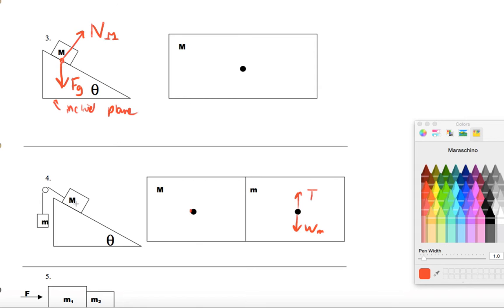And, let's see, on big M, I'm going to, I'll draw it here to make it easier for people. So, we'll have the normal on big M. We'll have the weight of big M pointing straight down. And we're going to have a tension force going to the left this way.